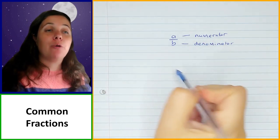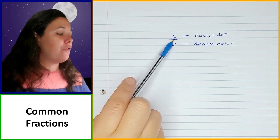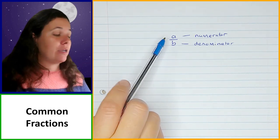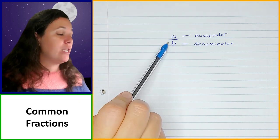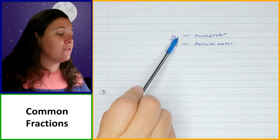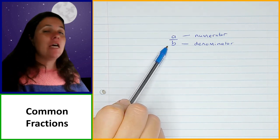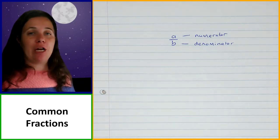They are both integers. The fraction line means division. So this means A divided by B, but when it's written in this form of A over B, this is a common fraction.